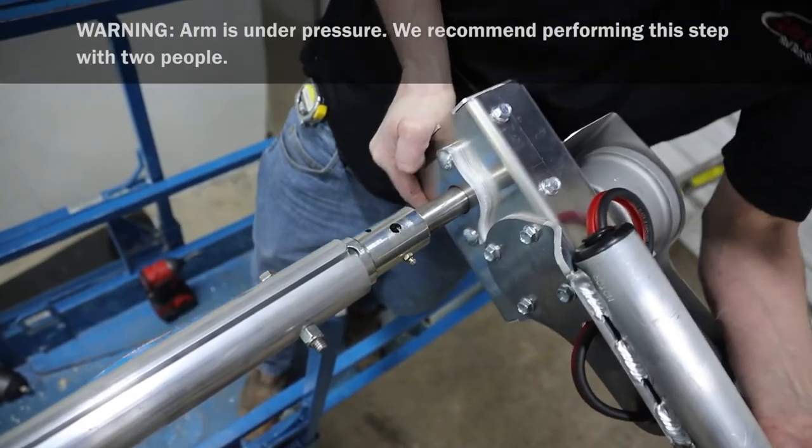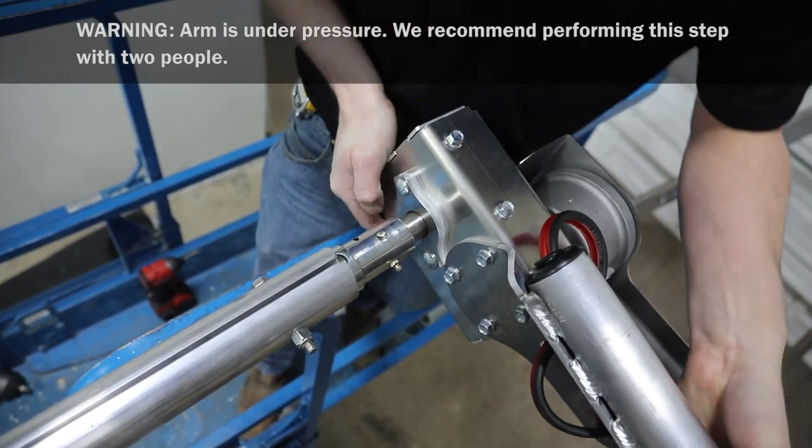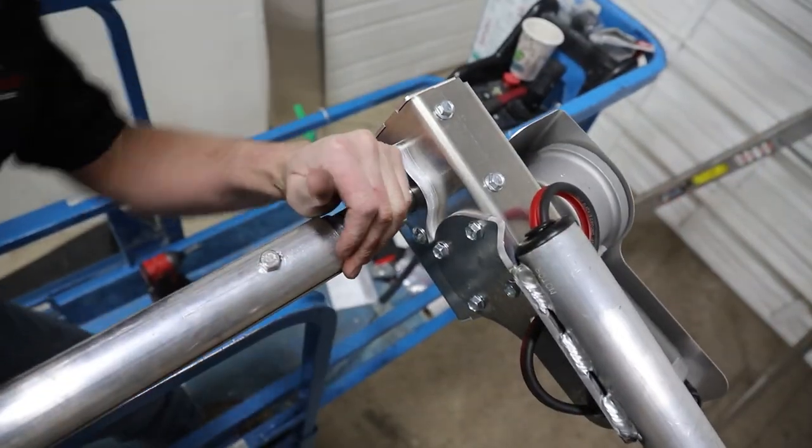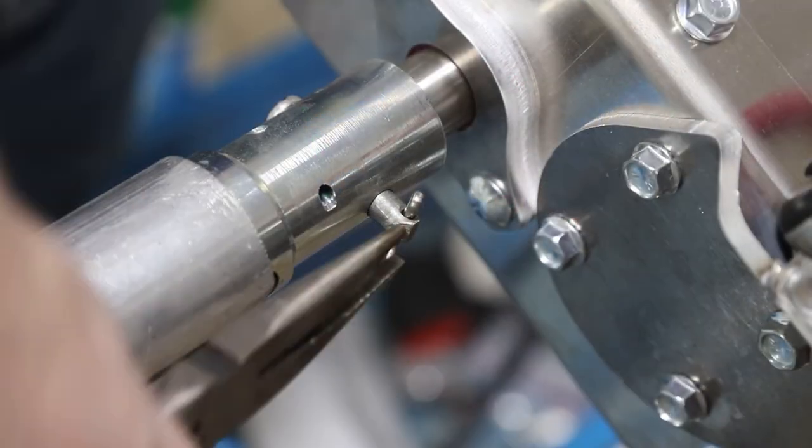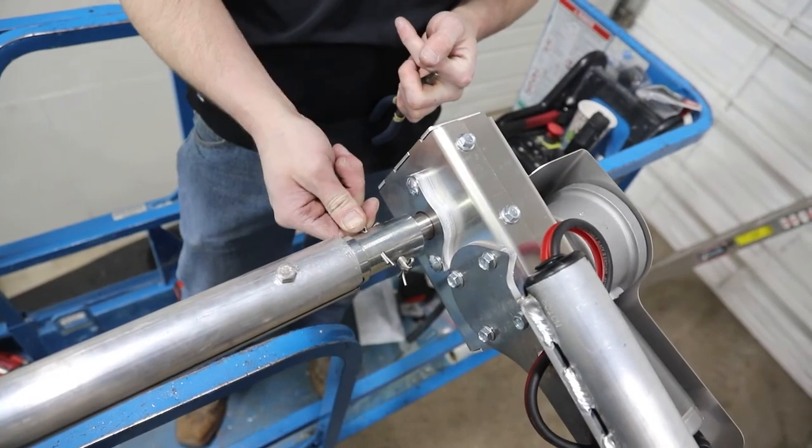Apply grease to motor shaft. Raise arm with motor and insert shaft into cartridge. Align holes in cartridge and shaft, then insert clevis pin and cotter pin. Bend tabs to secure, then secure with cotter pin.